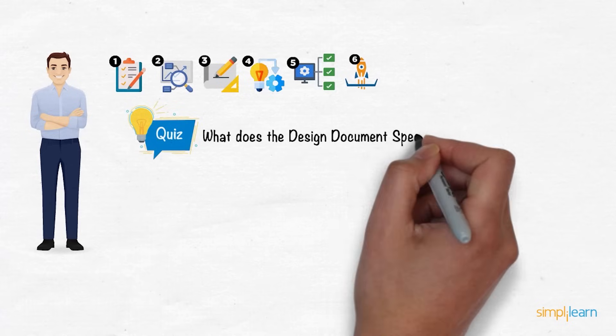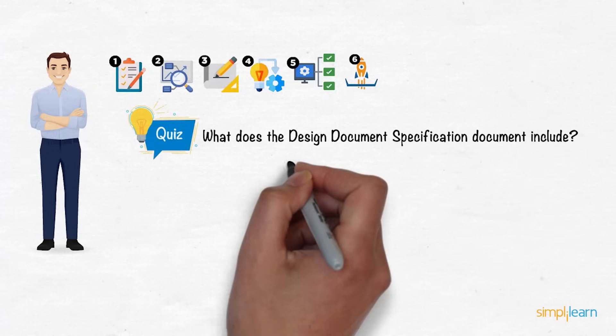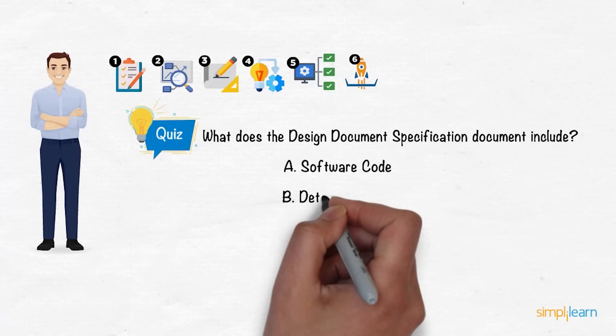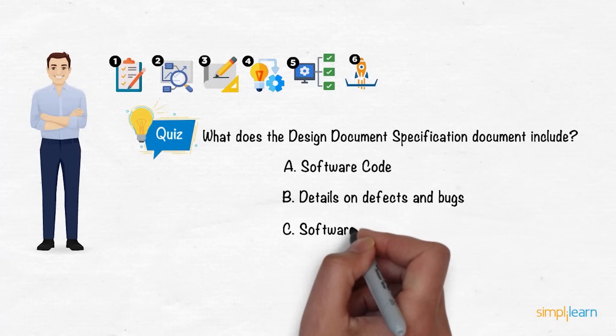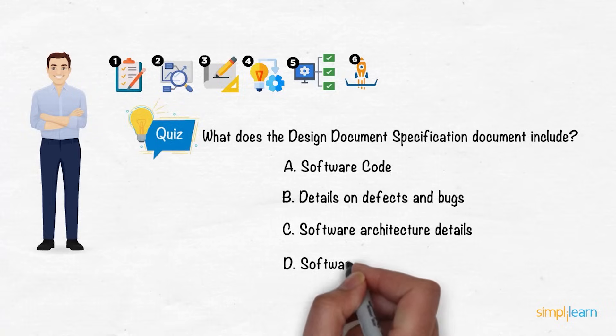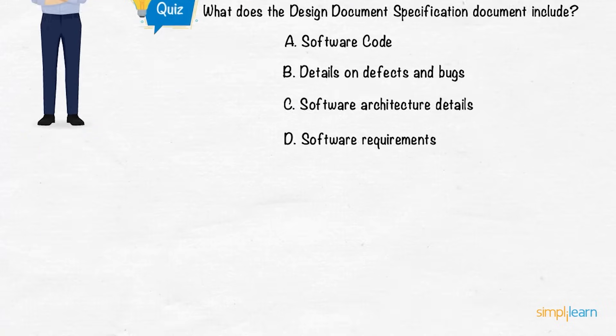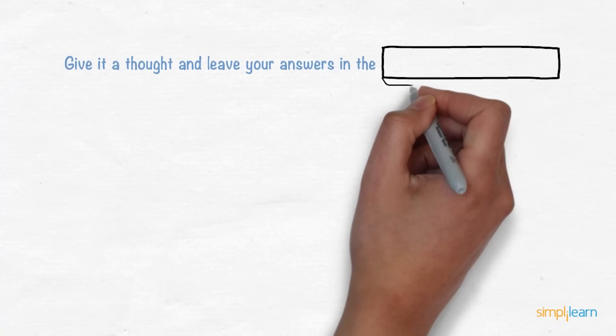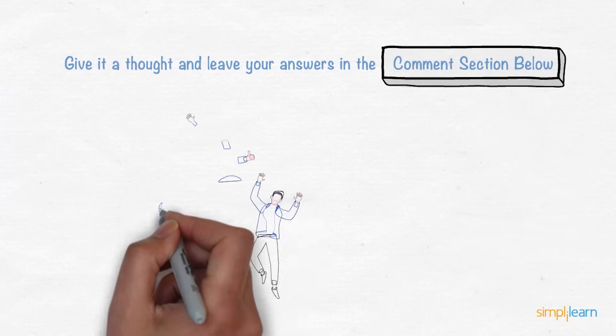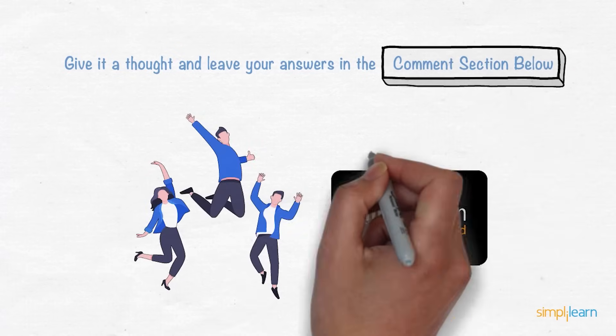What does the design document specification document include? Software code? Details on defects and bugs? Software architecture details? Software requirements? Give it a thought and leave your answers in the comments section below. Three lucky winners will receive Amazon gift vouchers.